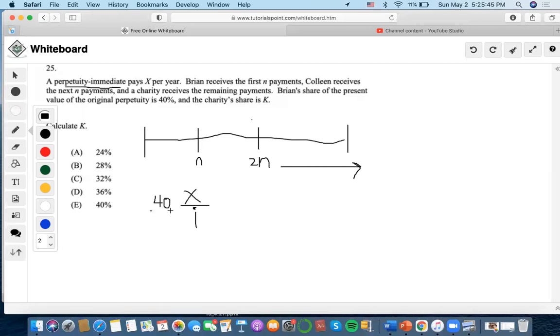Since the perpetuity immediate pays X per year, then the equation would be denoted as this perpetuity immediate. And it says Brian's share of the present value of the original perpetuity is 40%. So I'm just going to put 40% in. But since this region is Brian's share, and since it is denoted as being 40% of the original perpetuity, we need to set up an equation of what this is actually equal to. So since Brian receives the first N payments, he's also actually receiving the first N payments of X.